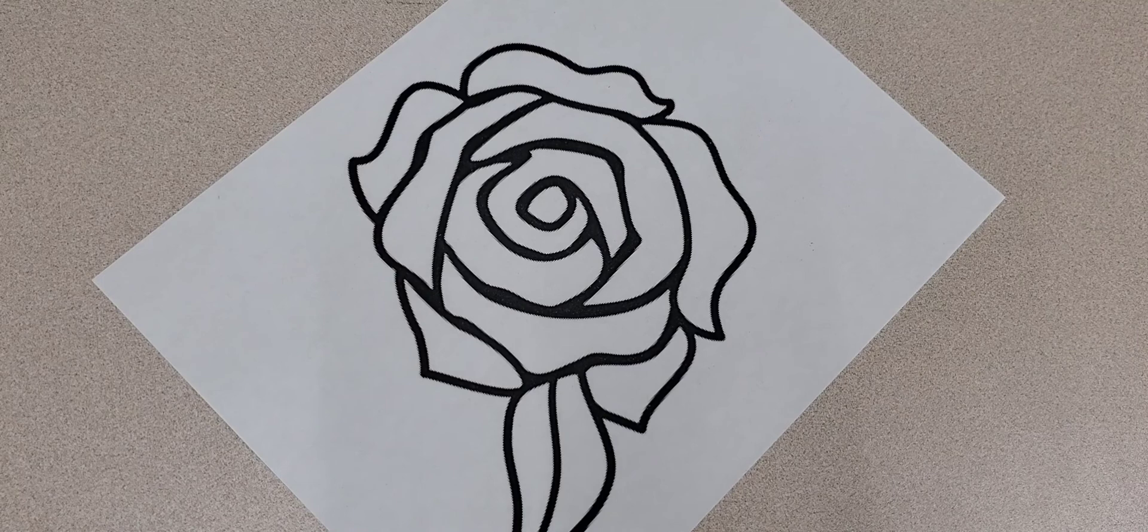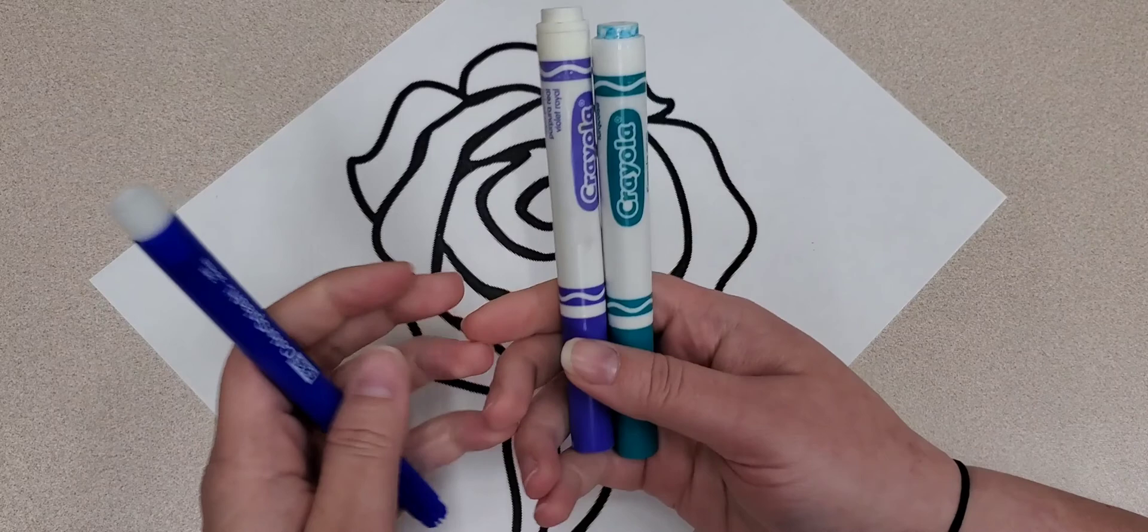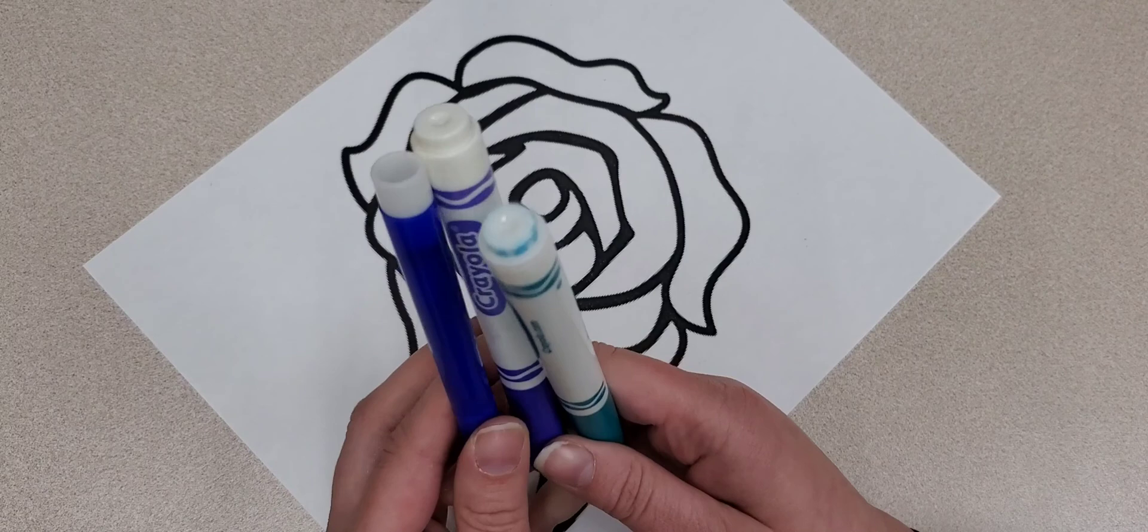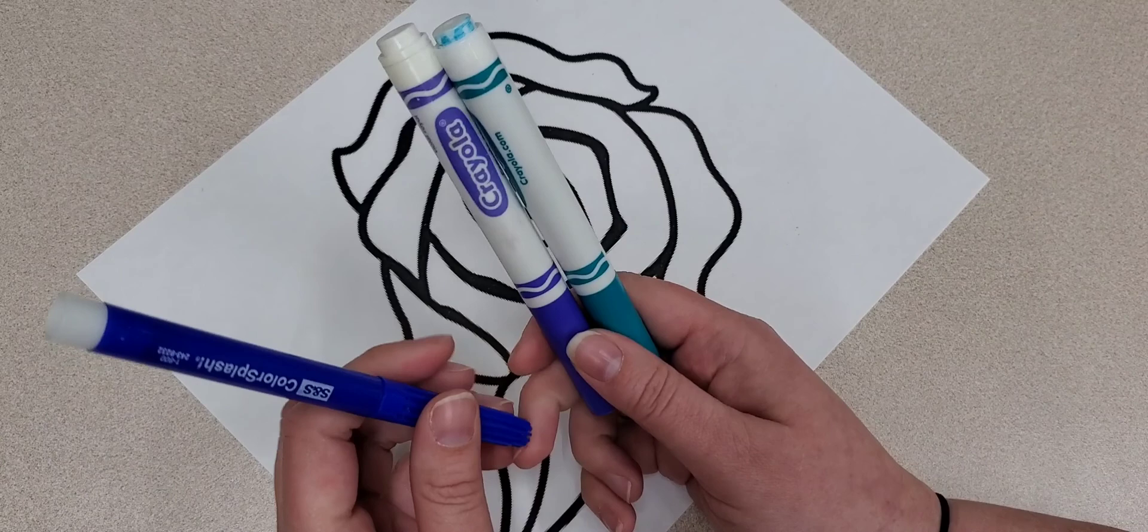Alright, so for this project what I'm going to do instead of using paint I'm going to use markers. So for this I'm going to use three different colors of marker. You can do this with similar colors, so if you have a light blue, a dark blue, a medium blue, something like that you can use.